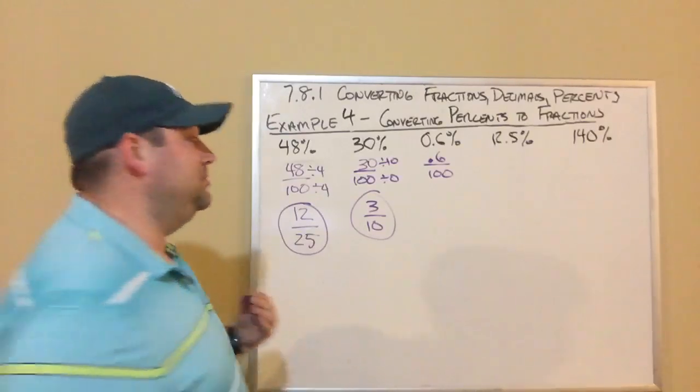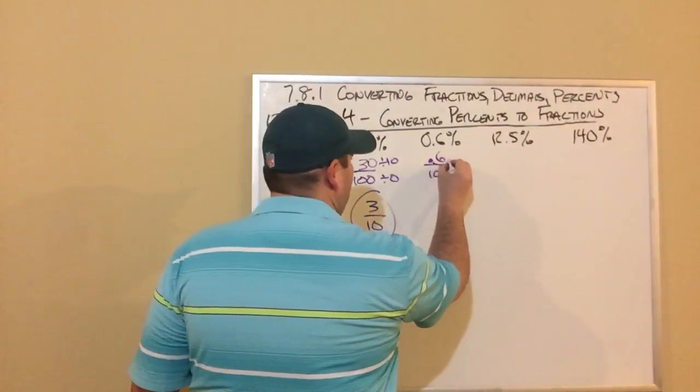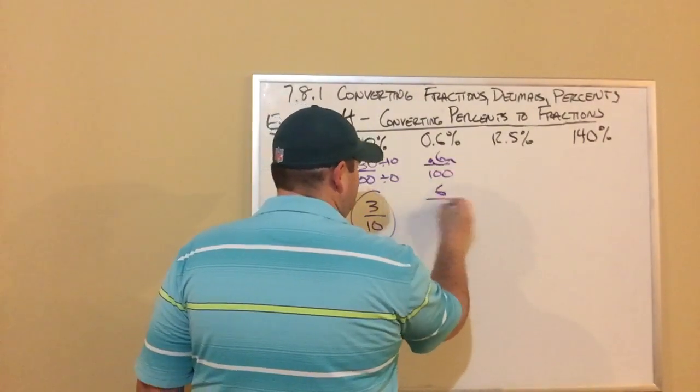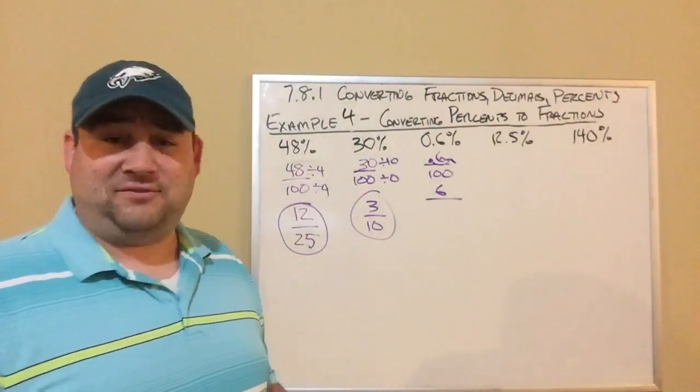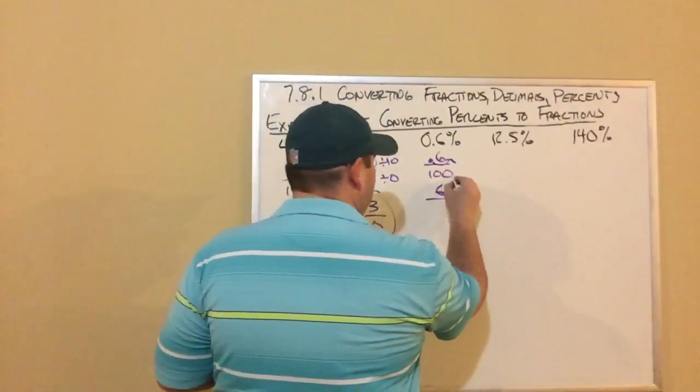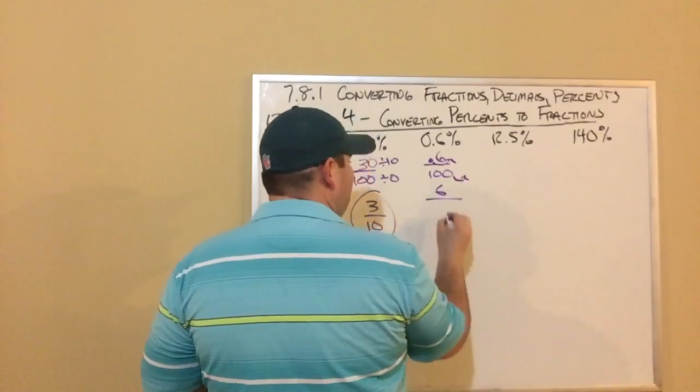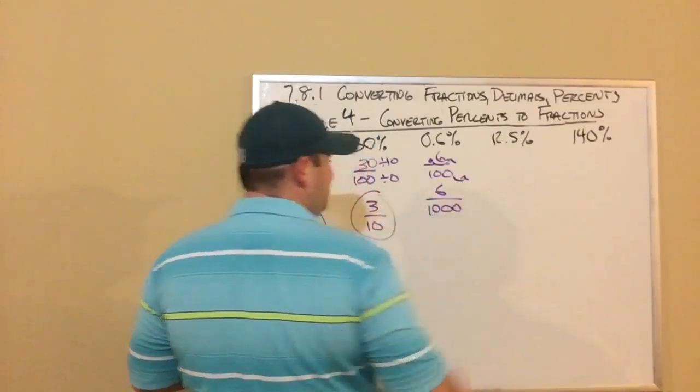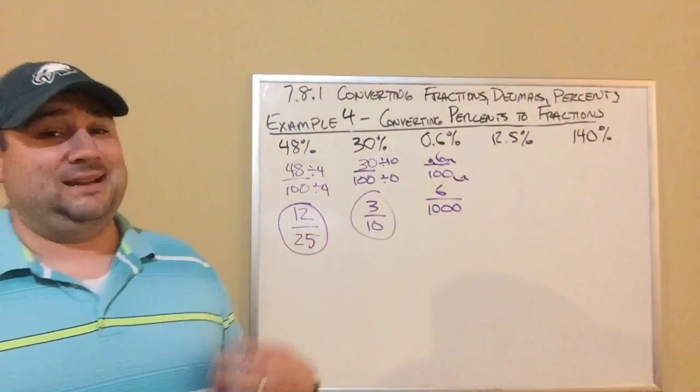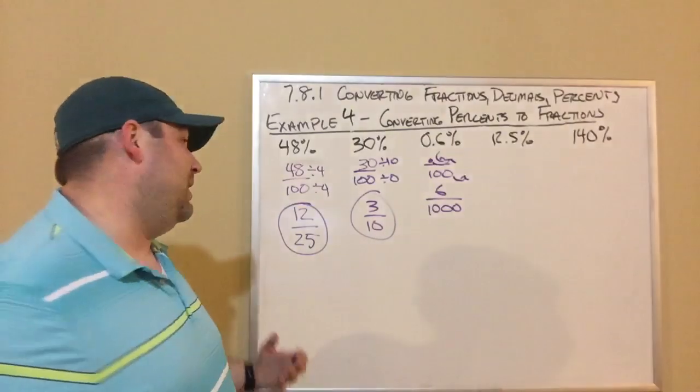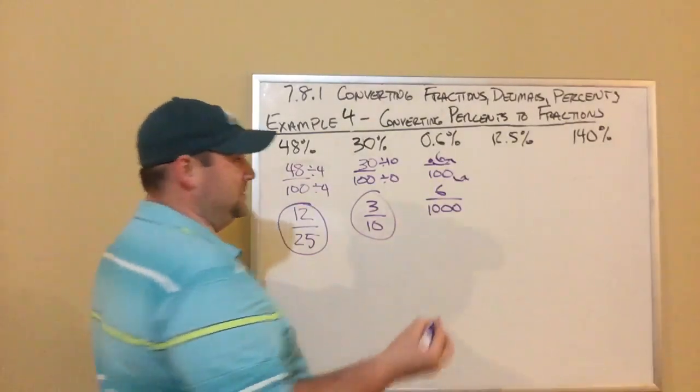To do that, I move the decimal one place to the right and it's a 6. But if I do that on the numerator, I also have to do it in the denominator. So I got to move the decimal one place to the right here, and now this is 6 over 1000. And I got to simplify that. So I look at 6 and 1000. I know 2 goes into both.